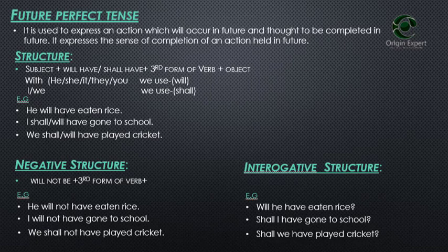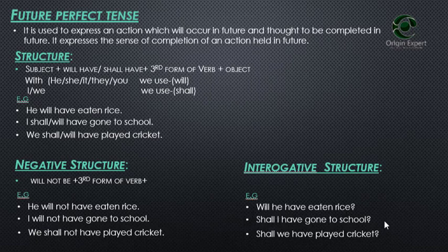If you make a simple sentence, you will not be able to make negative or interrogative. Negative is very easy — just add 'not.' For interrogative, bring the helping verb to the start and form a question. For example: Will he have eaten rice? Shall I have gone to school? Shall we have played cricket?